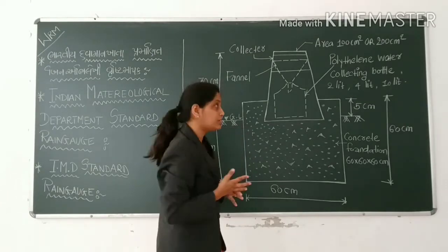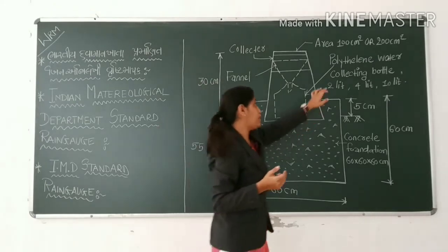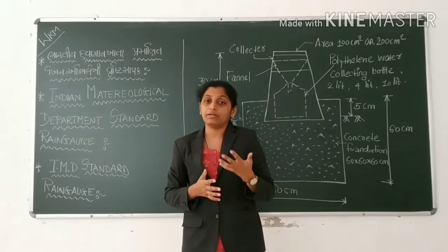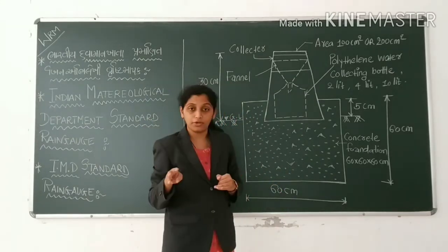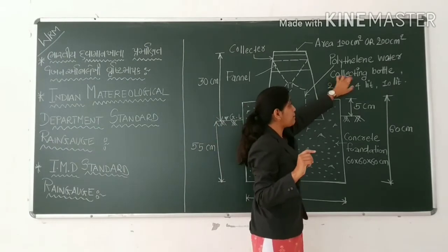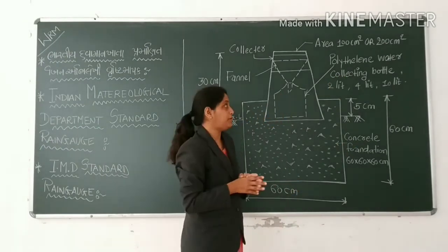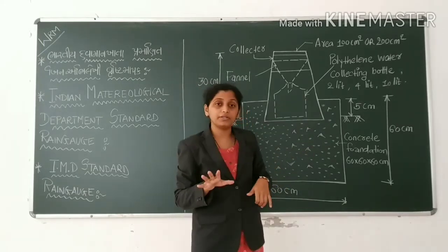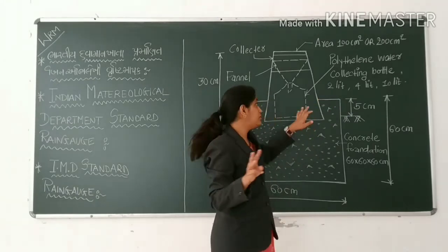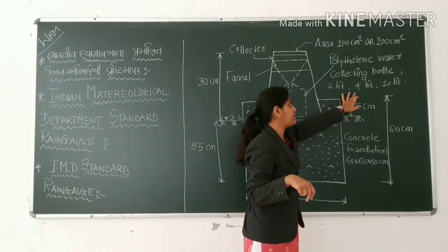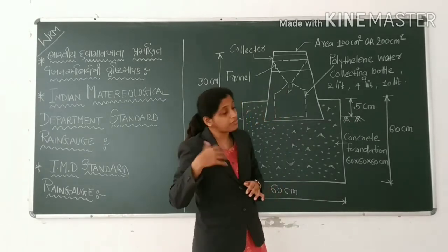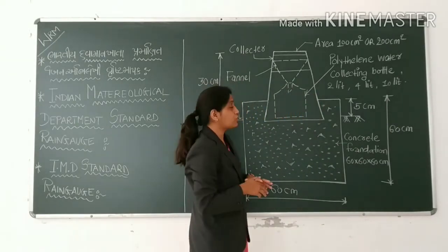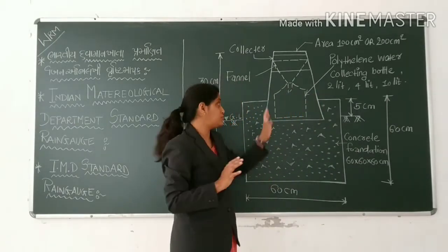We have a bottle component added to the rain gauge. This bottle is made of a specific material. There are three components overall. We also need to add the storage bottle, and there are different capacities available for heavy rainfall measurement.